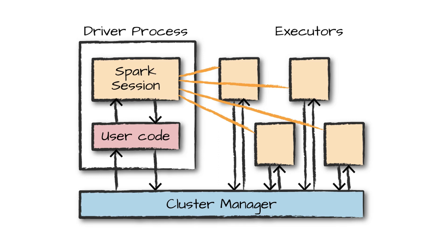Let's do a recap of what we saw in the last video. What are the very basic components of Spark architecture? When we talk about Spark architecture, there are certain basic components like driver and executor. The driver is the brain or the mastermind of a Spark application. The driver is the one who allocates tasks to the executors and coordinates and communicates with them when a Spark application is running.